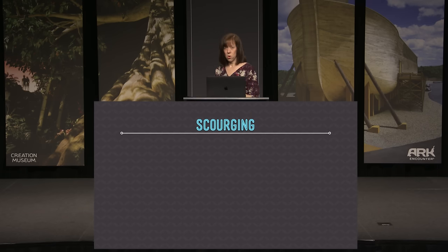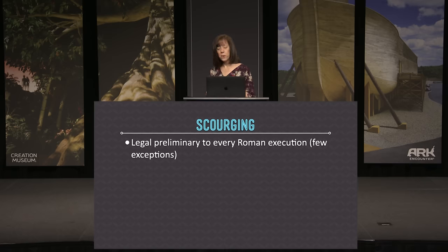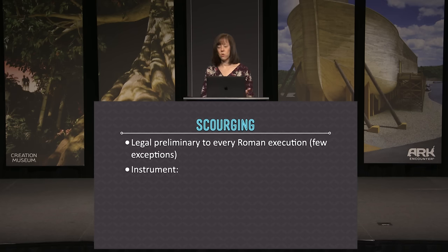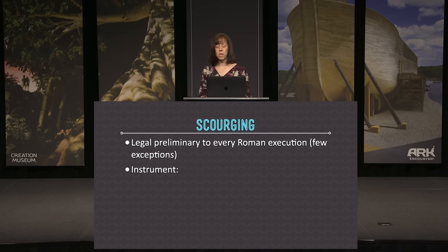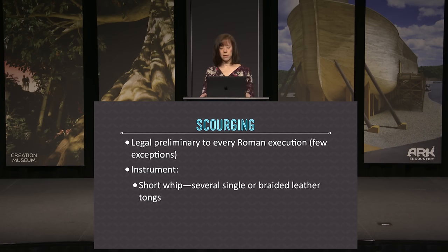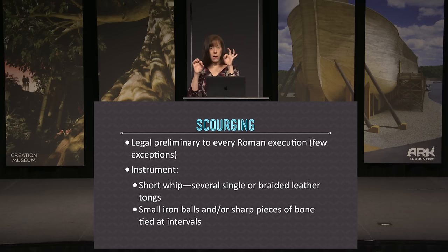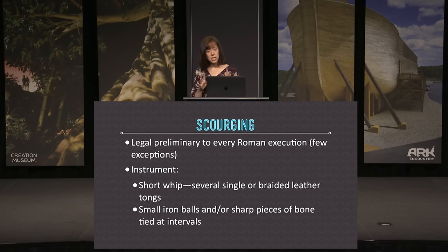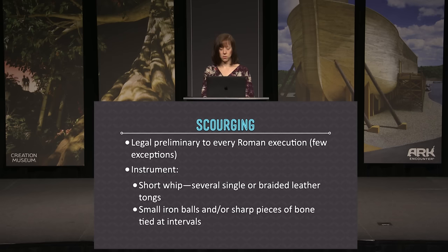The scourging or flogging was the legal preliminary to every Roman execution with few exceptions. The instrument used varied, but the primary one in this clip is a short whip with several single or braided leather thongs, onto which were tied iron balls and sharp pieces of bone at intervals. This is a very graphic event, but it's important to have a greater appreciation for the horrific nature of what Jesus went through.